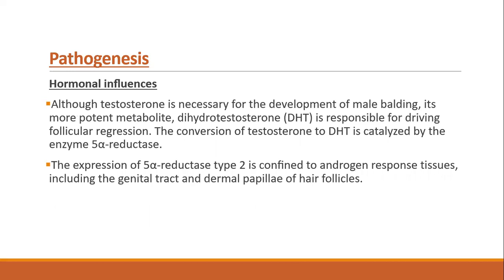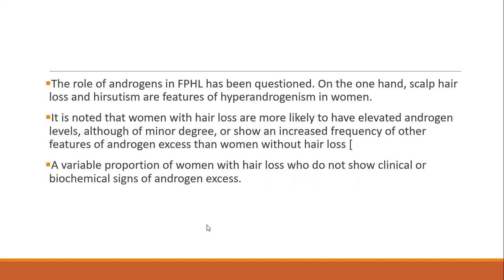Regarding pathogenesis and hormonal influence: although testosterone is necessary for the development of male balding, its more potent metabolite dihydrotestosterone (DHT) is responsible for driving follicular regression. The conversion of testosterone to dihydrotestosterone is catalyzed by the enzyme 5-alpha reductase. This is the most important enzyme in the pathogenesis of androgenetic alopecia and many treatments are directed at it. The expression of 5-alpha reductase type 2 is confined to androgen-responsive tissue including the genital tract and dermal papillae of the hair follicle.